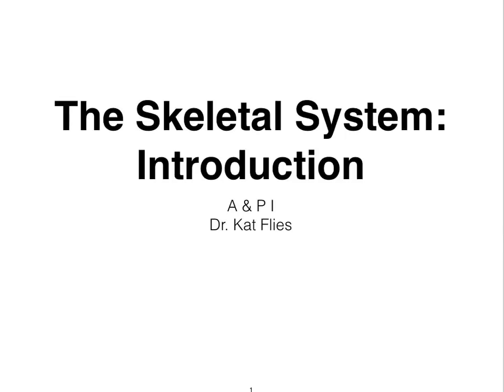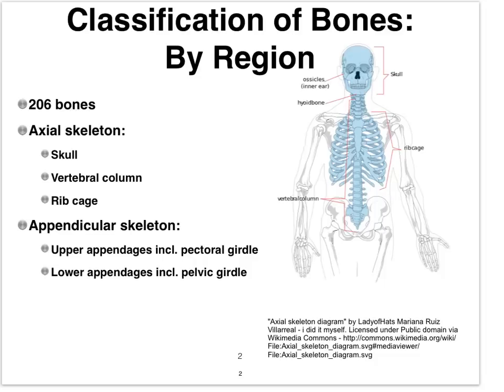Let's get started with the skeletal system today. First, we'll look at the different ways in which we can classify the bones of our skeleton. When we are fully formed, we have a total of 206 bones, but as a developing fetus we actually have many more. As we finish forming our bones, some of those bones merge, and we end up with just 206.